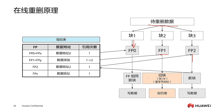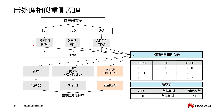If it is a new block, the system writes this new data block to our disk and records the fingerprint information of this data block in the fingerprint library along with the storage location mapping relationship. This is the principle of online heavy deletion.